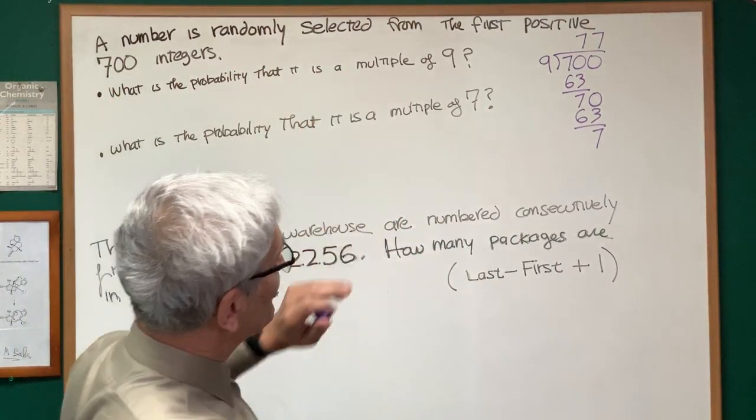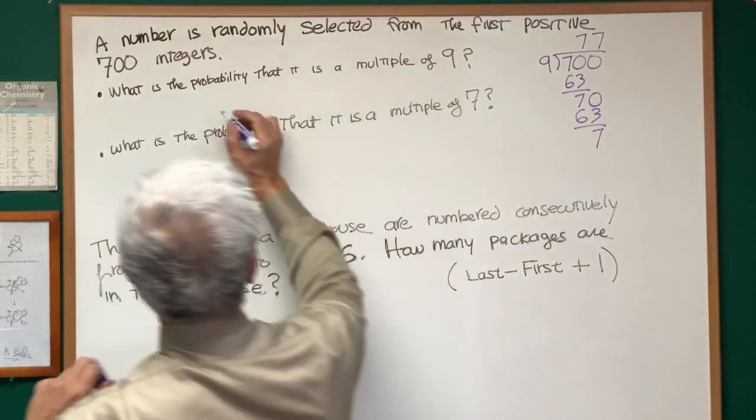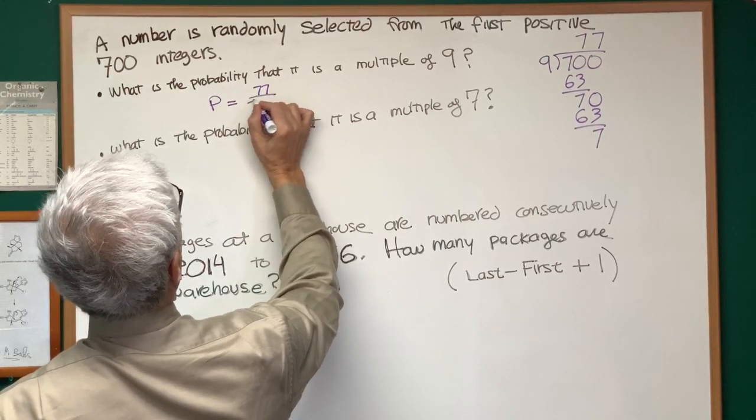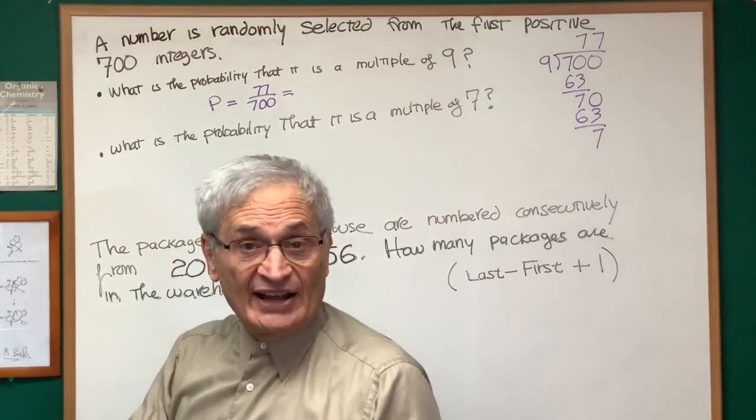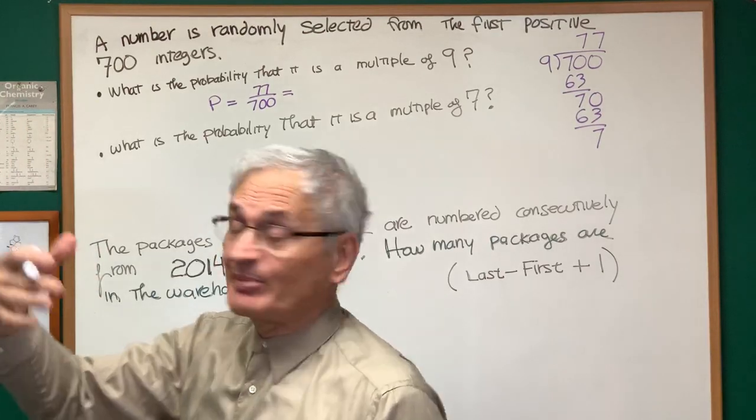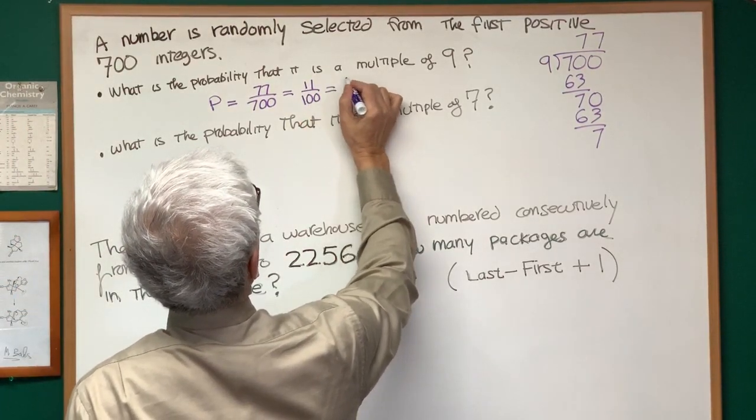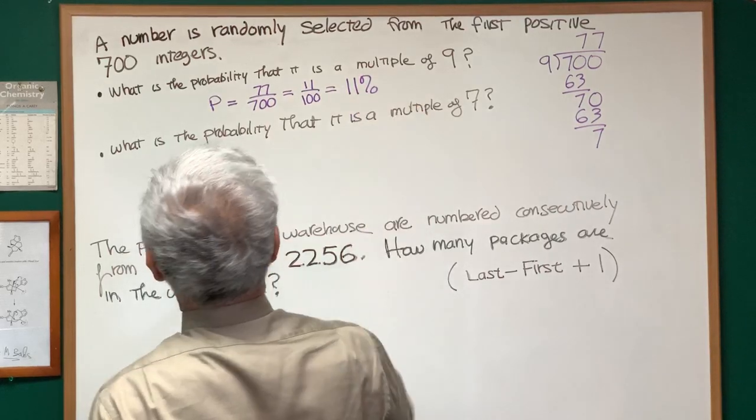So that means the probability is going to be 77 over 700, or reducing that by dividing numerator and denominator by 7, we have 11 over 100, which is then 11%.